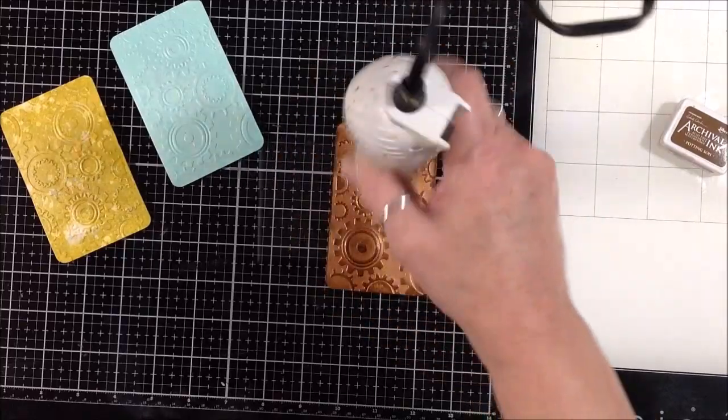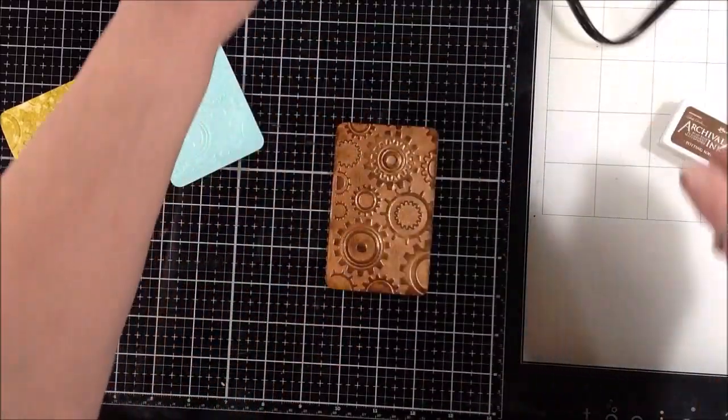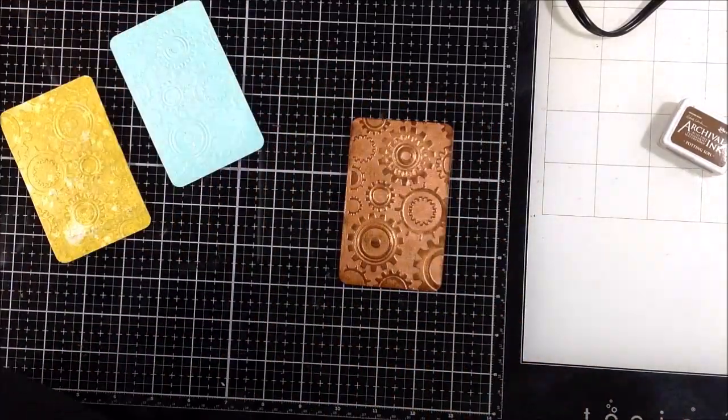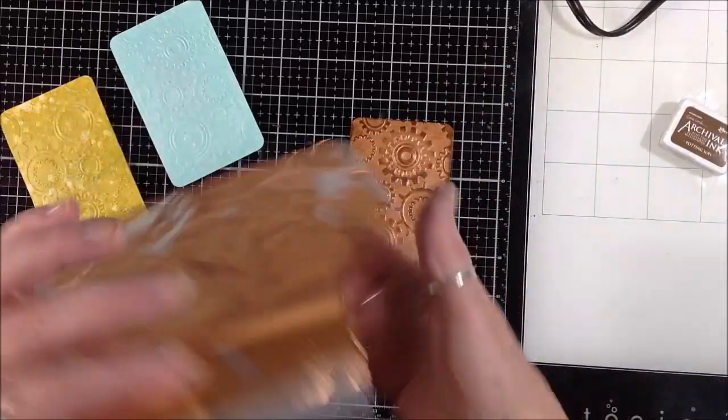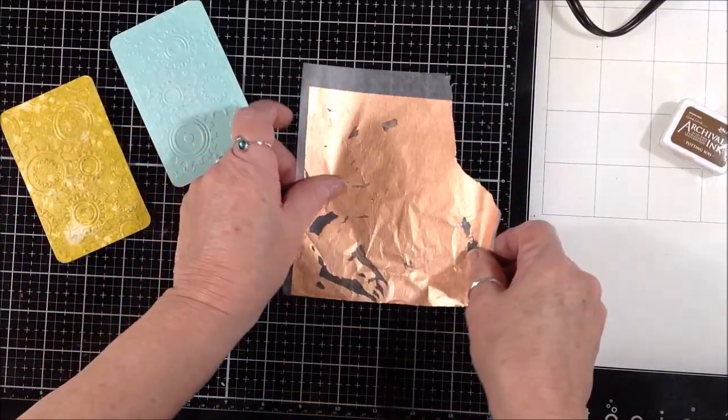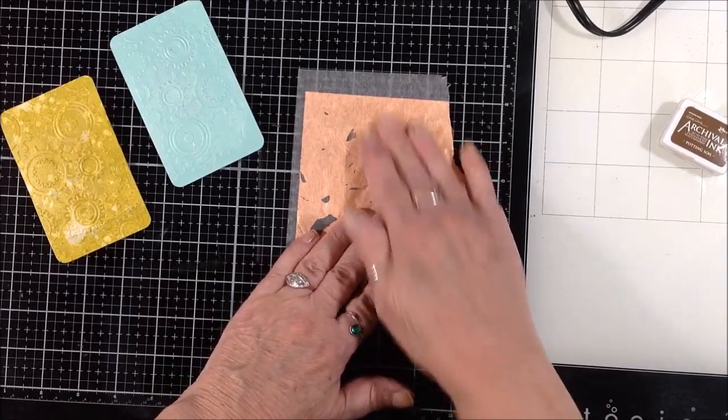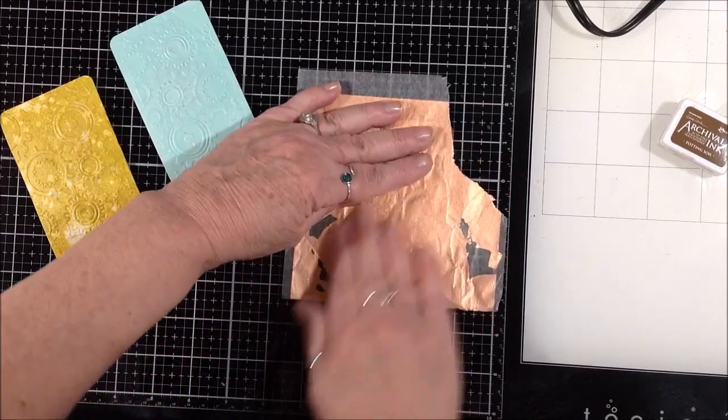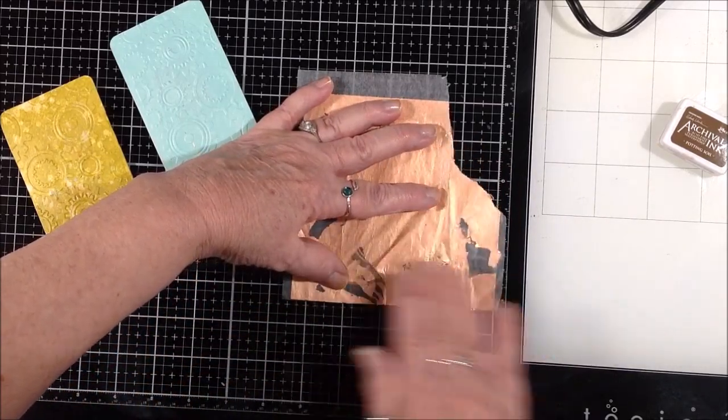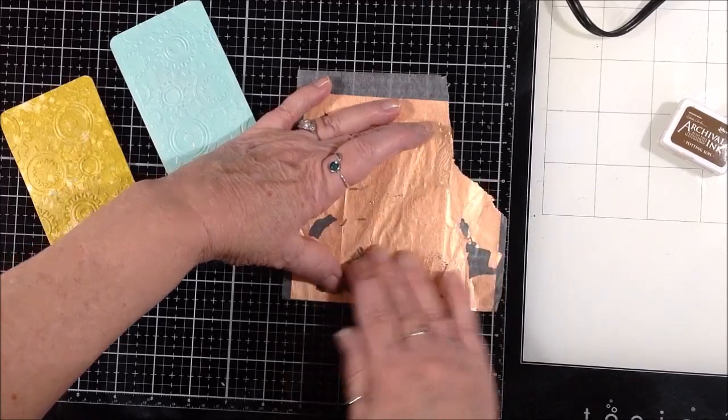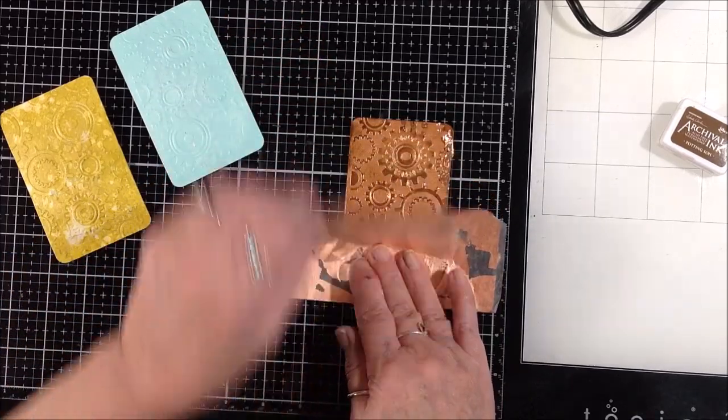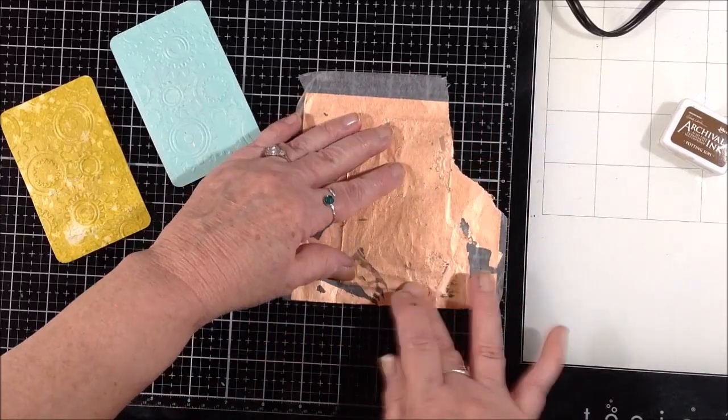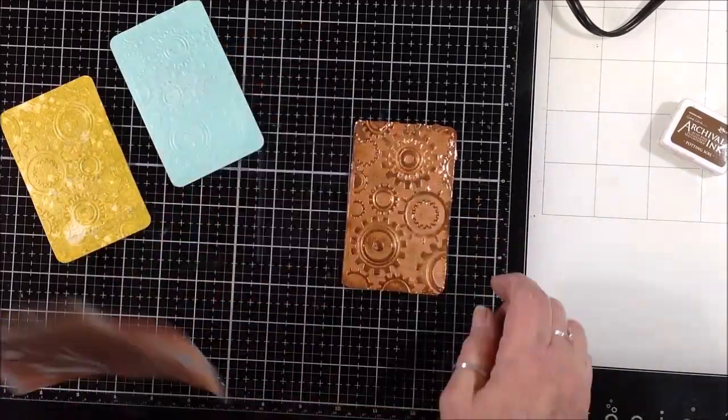I dried the ink off really well and I thought, I wonder if my simple leaf would lay down any gold on this. It's not sticky really at all so I wasn't sure if it would work, but I figured it's worth a try. I just laid it down and really rubbed hard, hoping that maybe there were just some little areas of ink that would still pick up this gold leaf. I got a few little spots so I was encouraged and just kept at it until I got it the way I liked it.